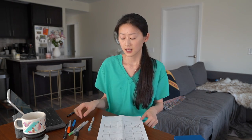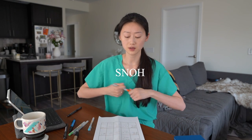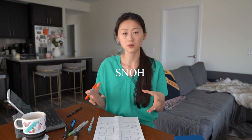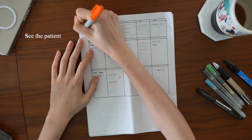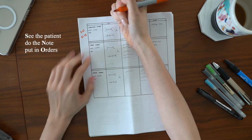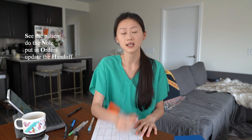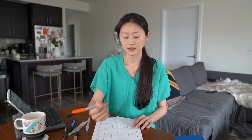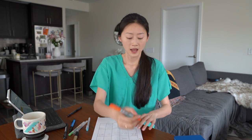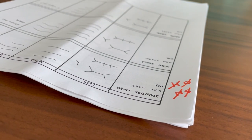One of the easiest and beginner ways to start organizing lists is the SNOW acronym. S stands for see the patient, N stands for do the note, O stands for putting in orders, and H stands for updating the handoff or task sheet. So once you've seen the patient, cross out the S. You've done the note, cross out the N. If you've done the note for one patient but not the orders yet, go ahead and cross out that N. The SNOW acronym works really well if you're just trying to keep an overall view of generalized tasks that you've completed.